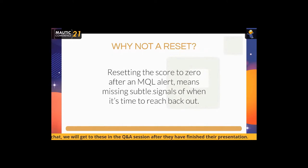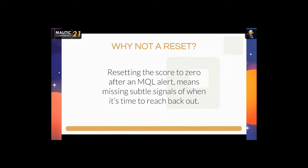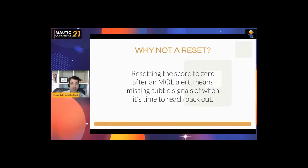Many marketers, instead of a decay model, simply reset the score to zero once they've dealt with the lead. The problem is that's not how someone's natural relationship with your brand actually works. If I'm interested, come to your website, trip the threshold, and someone reaches out but I say I'm just browsing — they reset my score to zero. Three weeks later I'm ready to buy, but I've already seen most of your website, so I won't hit as many scoring opportunities. You want to catch that renewed intent and pop them back over the threshold.